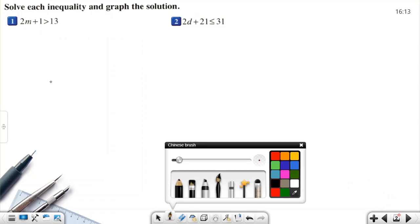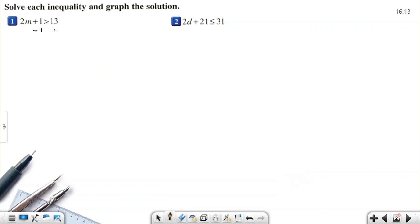Okay, first example. As you remember, there's a constant. I need to cancel this constant first. Add 2m. So this will be 0, this will be 12. 2m greater than 12. Divide by 2 on both sides. m is greater than 6. Of course, you need to graph the solution.